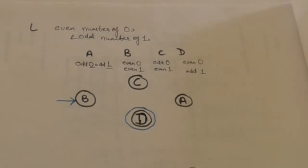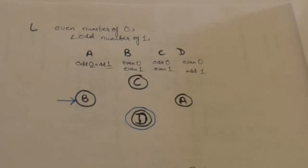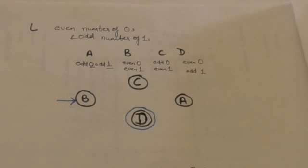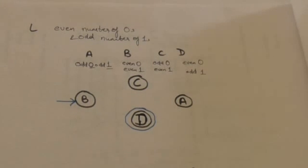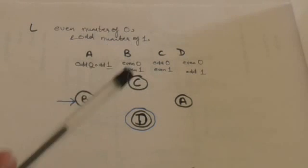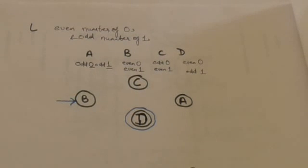Now we have to construct a finite automata which will accept the language L. Since the language has divided all strings of 0 and 1 into four classes, the finite automata must have at least four states, each corresponding to each class of strings. State A corresponds to class A, state B corresponds to class B, state C corresponds to class C, and state D corresponds to class D.